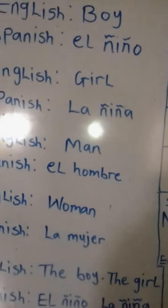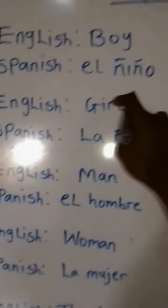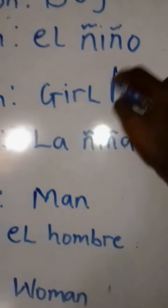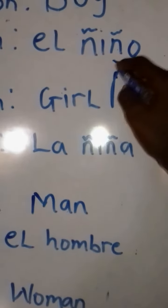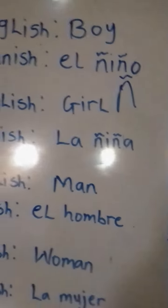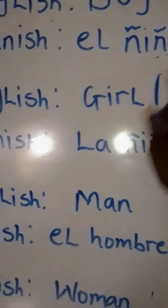If you notice something, you will see something on the N — it's a symbol. If you want to write N in Spanish, you write it like this, then you put your symbol there. That's how we write N in Spanish.